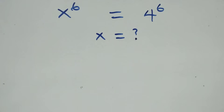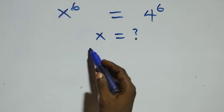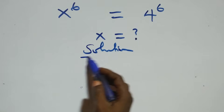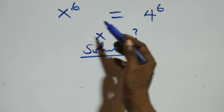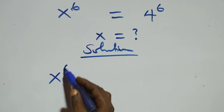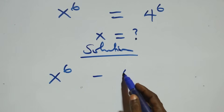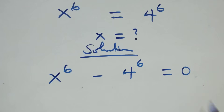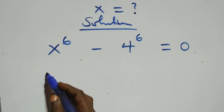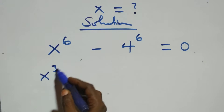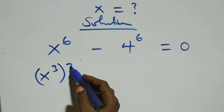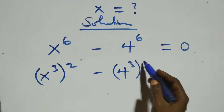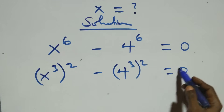Hello, you are welcome. Here we solve a nice exponential equation. We take 4 raised to power 6 to the left hand side, so this becomes x raised to power 6 minus 4 raised to power 6 equals to 0. The next step, we can write this as x raised to power 3 squared minus 4 raised to power 3 squared equals to 0.